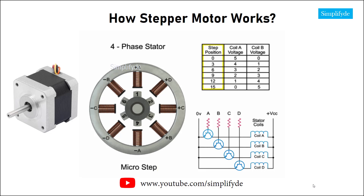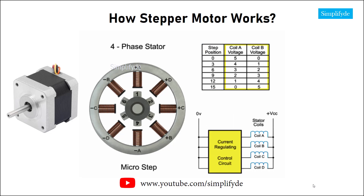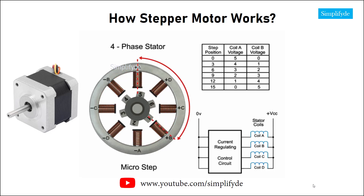Micro-stepping controls the current in the motor winding to a degree that further subdivides the number of positions between poles. To achieve microsteps, the coils are only partially energized. As we apply a maximum voltage of five VDC to coil A and a minimum voltage of zero VDC to coil B, rotor position one will line up. Reducing the voltage to coil A and increasing voltage to coil B, the rotor will begin to rotate in a clockwise direction and continue until the voltage is zero at coil A and five at coil B. This process continues at all coils within the stator to provide accurate positioning. As you can see in this example, one hundred twenty steps are required to make a full rotation at three degree increments.